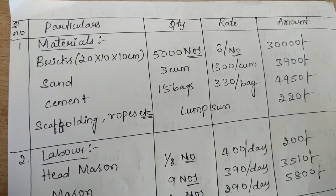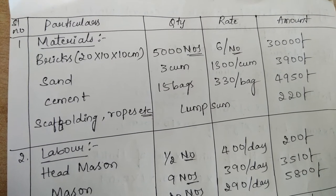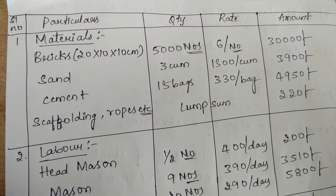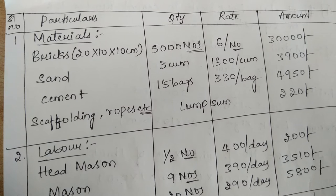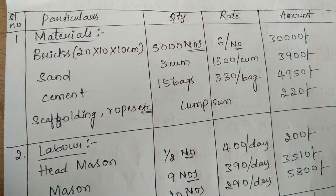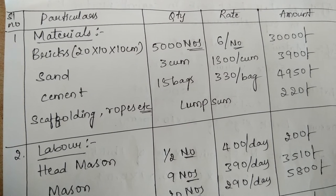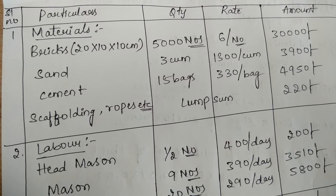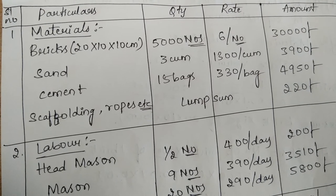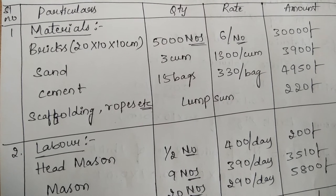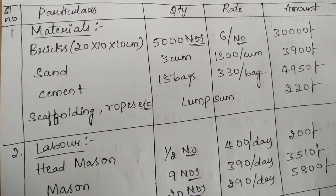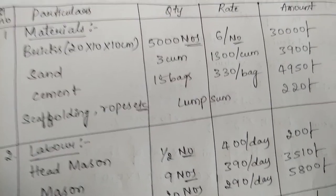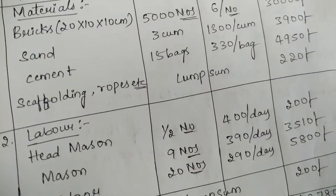Now let us draw the table for the rate analysis. The table should consist of serial number, particulars, quantity, rate as well as amount. The table will be divided into three parts: material quantity, labor quantity, and contingency quantity. In the material quantity, as we are doing for first class brick work, the materials required are bricks, sand, cement, as well as scaffolding and ropes for the construction of superstructure.